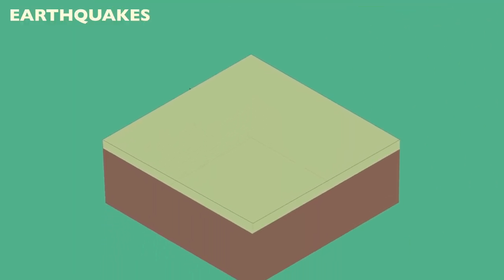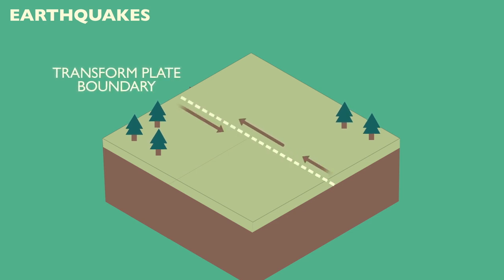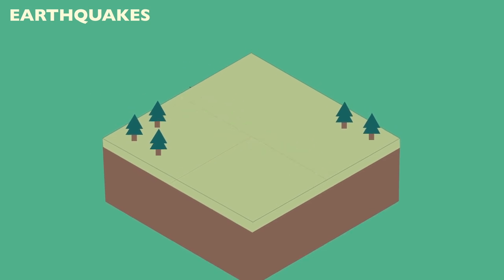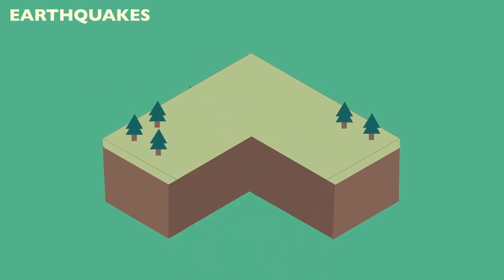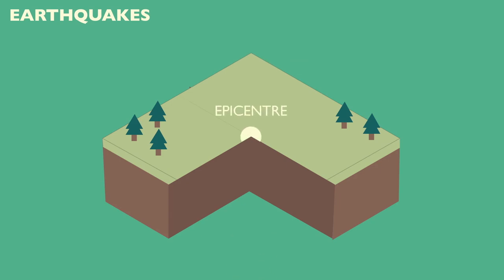Every 30 seconds there is an earthquake somewhere in the world. Earthquakes are common at transform plate boundaries: as two tectonic plates move in parallel, friction causes them to stick. When they eventually become unstuck, it is often with a violent jolt, causing an earthquake. The focus of an earthquake is the point deep underground where the earthquake begins. Shock waves called seismic waves spread out in all directions from the focus. The epicenter is the point on the Earth's surface immediately above the focus — it is here that the earthquake is felt most strongly.